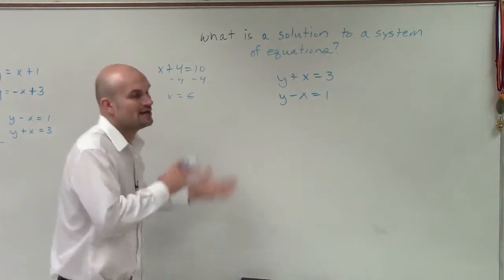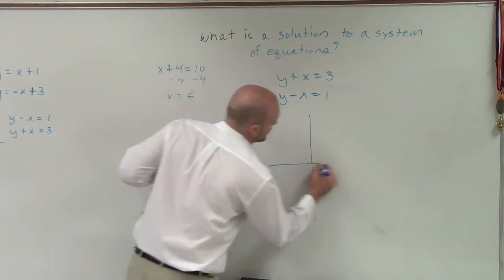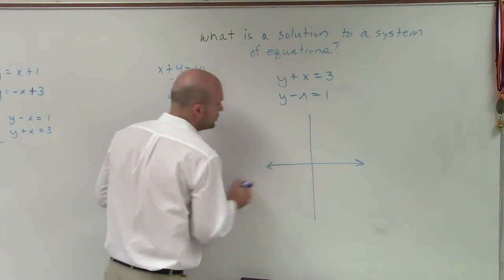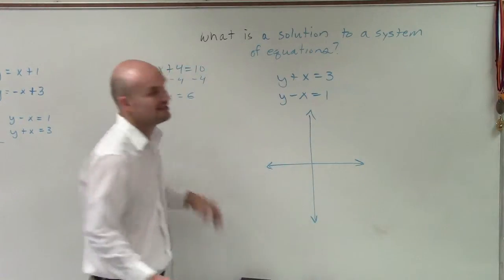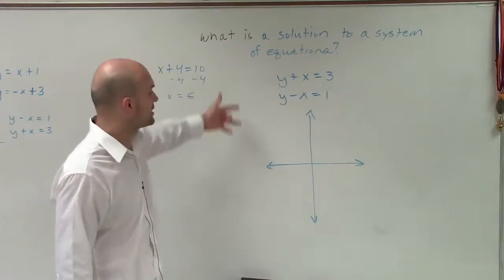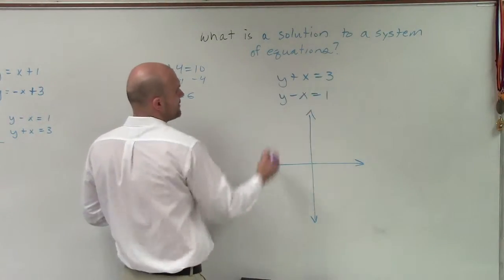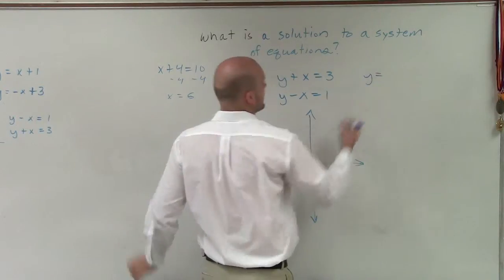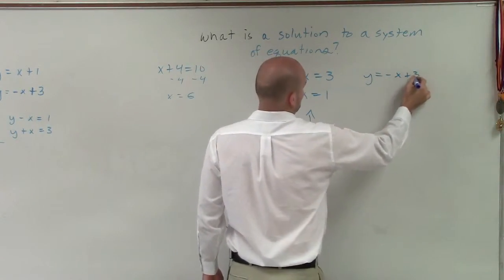So we're going to learn algebraically how to find those values. But I want to graphically kind of show you what your solution looks like. So when we're talking about the solution of a system of equations, it's the values of your variables that are going to make both of your equations true. Now, if I was to graph this, I can rewrite this in y equals mx plus b form.